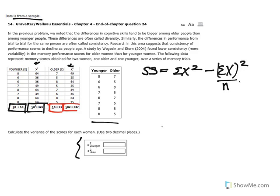And so now with this information I can solve for SS for both distributions. So we will start with the younger group first and calculate SS by replacing variables. So SS is equal to the sum of scores that have been squared which in this case is 426. We are going to subtract the sum of x which is 58. We are going to square that value.